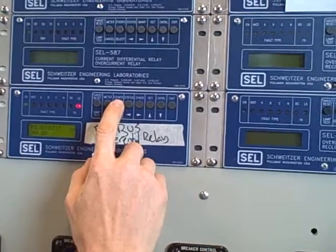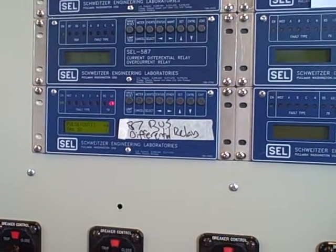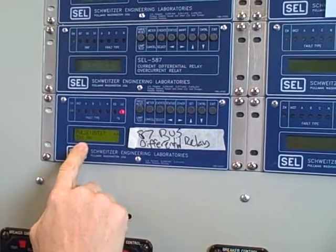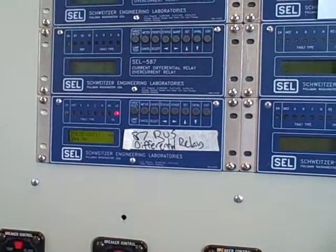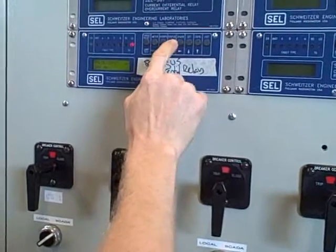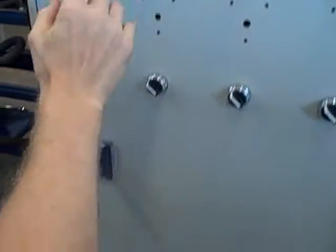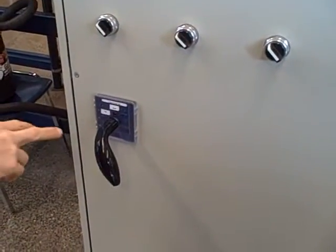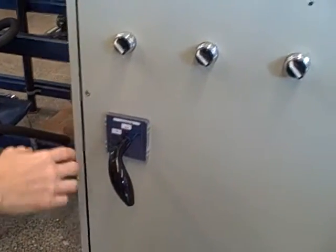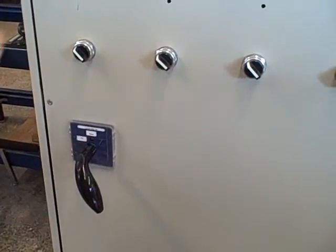I'll select that. It says do you really want to do this — which is a good thing, because you really want to think twice before doing this in a working system. By pulsing this output contact I'm essentially forcing a trip condition. After I move the toggle over to the yes mark I press select, and there we go. It pulsed the output — that tripped my lockout relay, the spring-loaded handle kicked over to the trip position, and that tripped all my breakers.